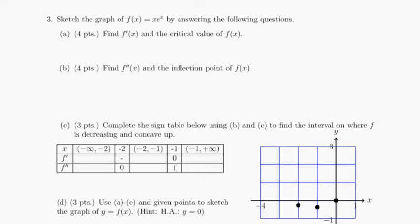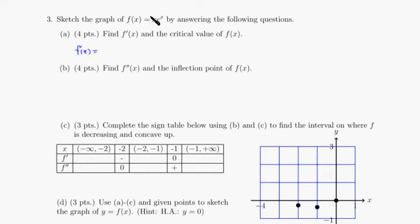Let's look at exam 3a, problem number 3. We have f of x which is x times e to the x. Part a, we want to find the derivative. So f prime of x — this is two things multiplied together, so we're going to use the product rule to take the derivative.